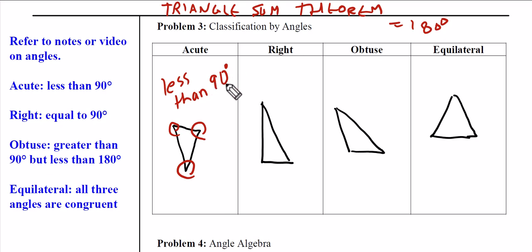Triangles do not add up to more than 180. They actually add up exactly to 180, so it makes sense that all three of these angles could be less than 90 because they all three got to add up to 180 degrees.